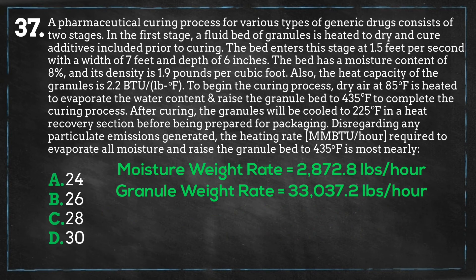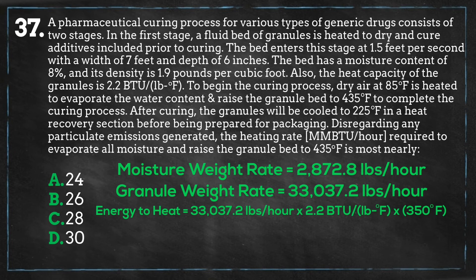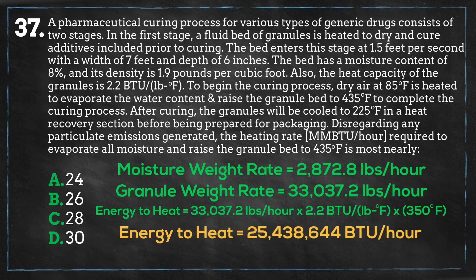For heating the bed from 85 degrees Fahrenheit to 435 degrees Fahrenheit, the heat capacity of the granules is 2.2 BTU per pound degree Fahrenheit. We multiply the heat capacity by the hourly granular process rate and the temperature increase of 350 degrees Fahrenheit, and we get 25,438,000 BTU per hour as the energy required to heat the bed.